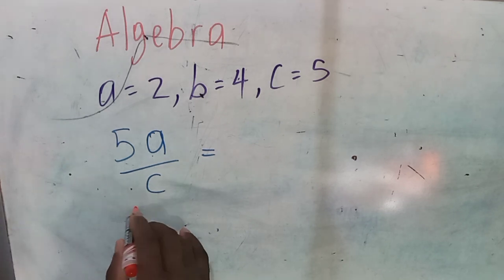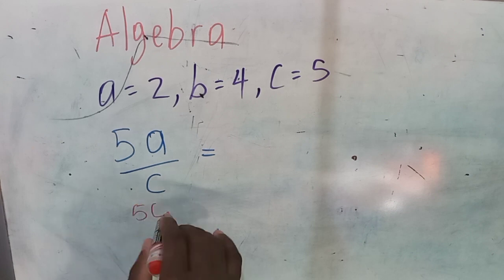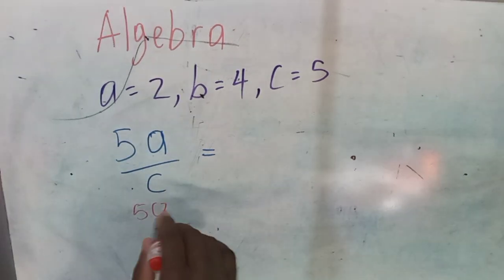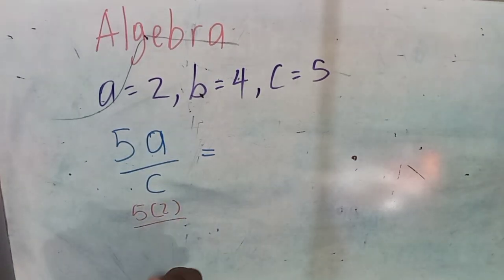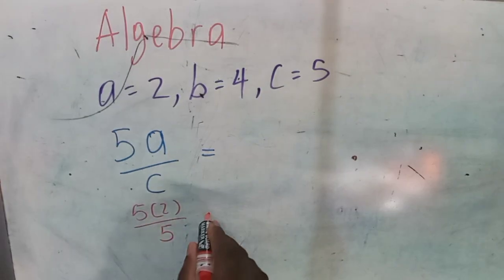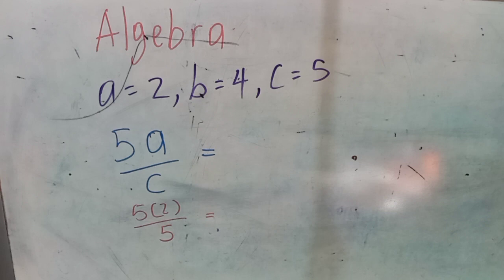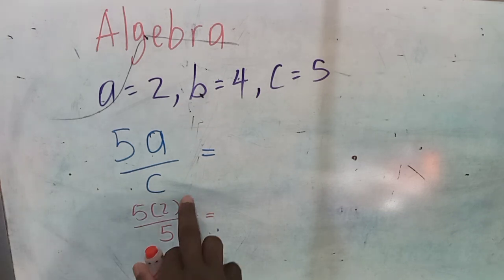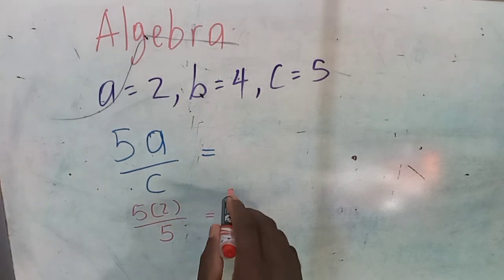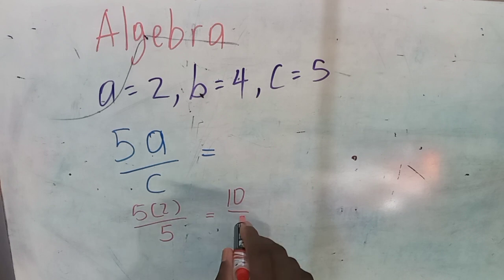5. What's the value of a? 2. Over c. What's the value of c? 5. So we have 5 times 2 over 5. 5 times 2 equals what? 10 over 5.